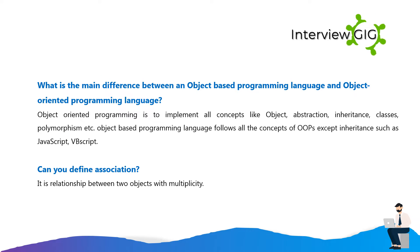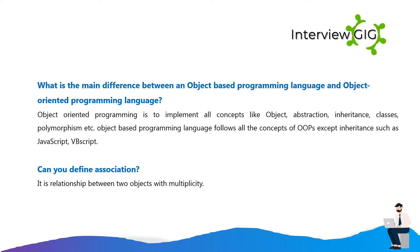What is the main difference between an object-based programming language and object-oriented programming language? Object-oriented programming implements all concepts like object, abstraction, inheritance, classes, polymorphism, etc. Object-based programming language follows all the concepts of OOP except inheritance, such as JavaScript and VBScript.